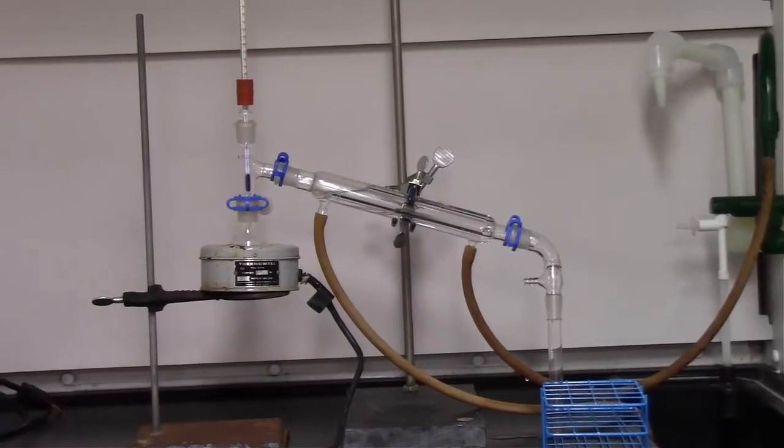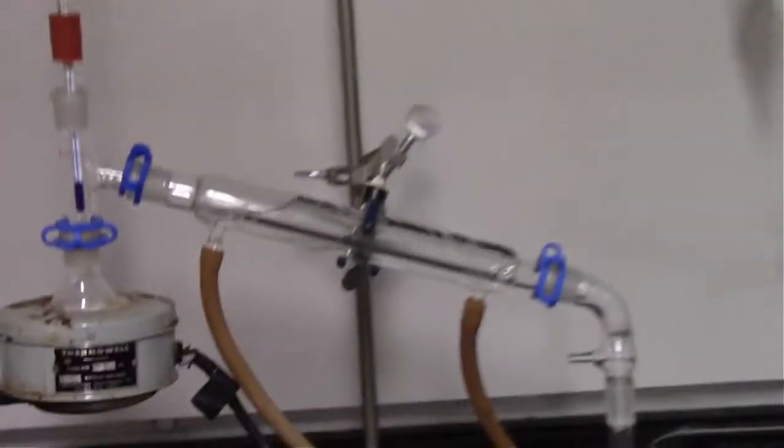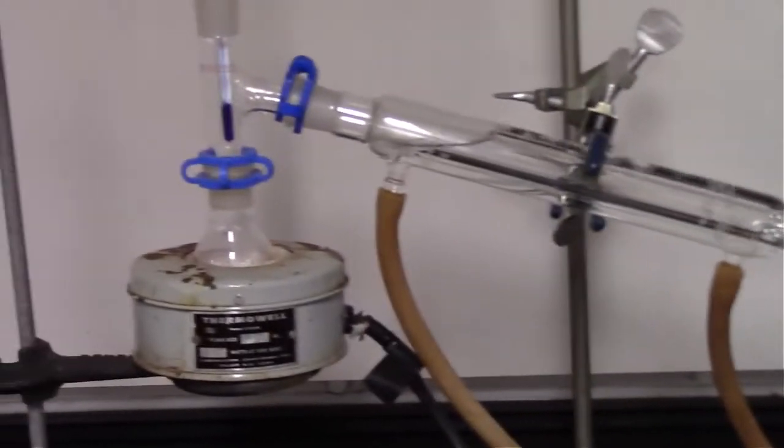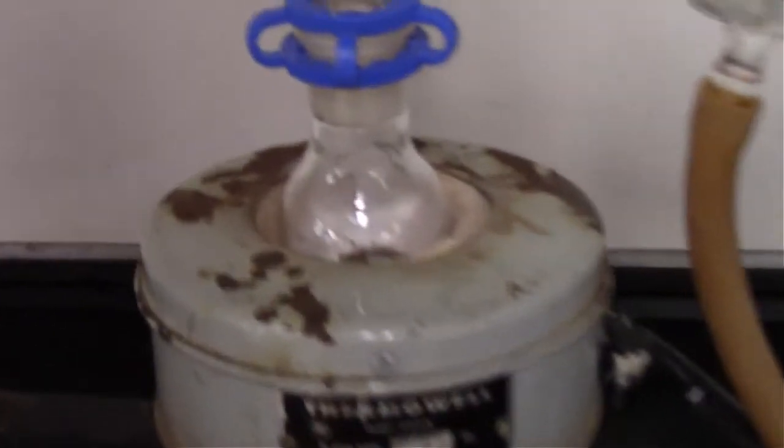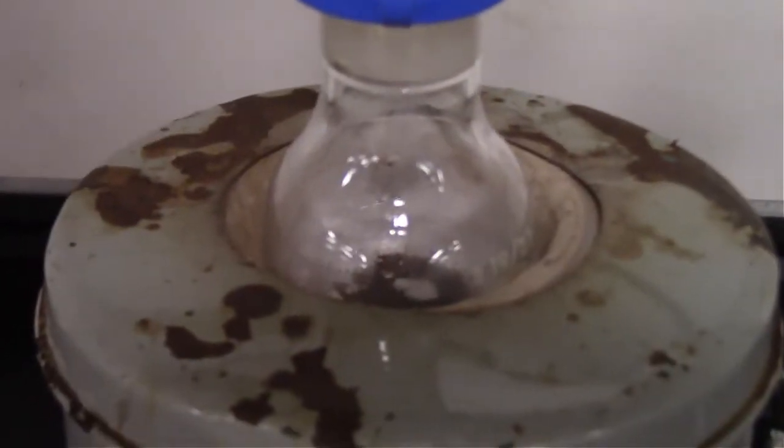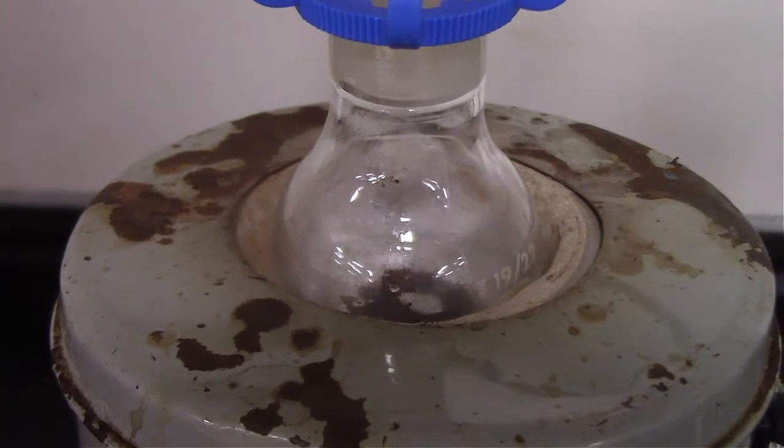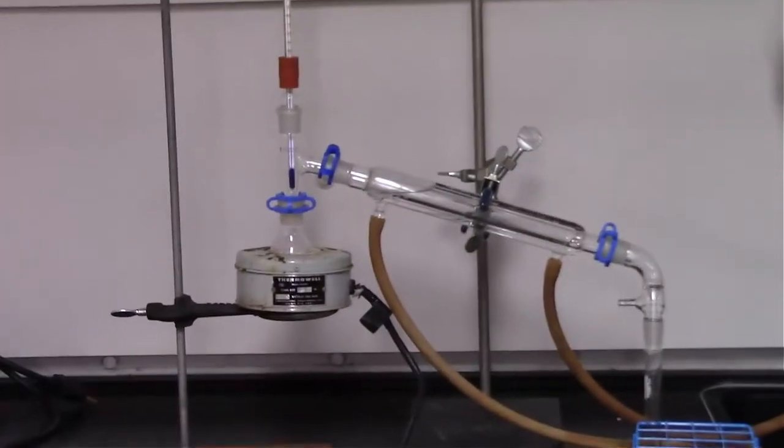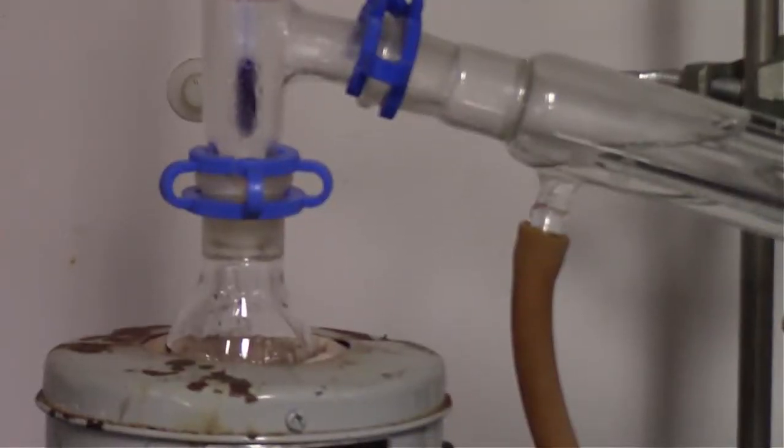So with our simple distillation apparatus, you can see water going in the bottom of the condenser, out the top. We've got the head of the thermometer down below the exit of the three-way adapter. We can see inside that round-bottom flask our Amberlyst-15 and our cyclohexanol.